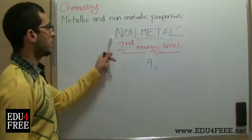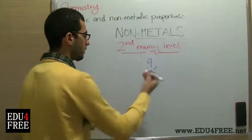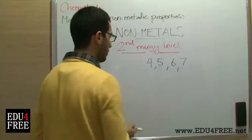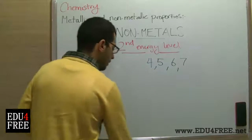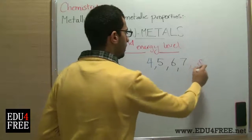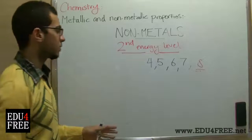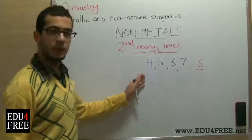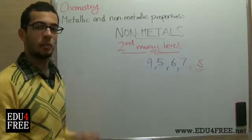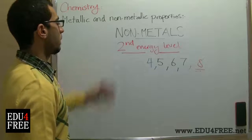So in nonmetals, the second energy level as the outermost energy level can carry five, six, or seven electrons. The maximum capability of the second energy level is eight electrons, but if it carries eight electrons it will be completely filled and this will be an atom of a noble gas. So this is the first property of nonmetals.